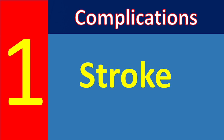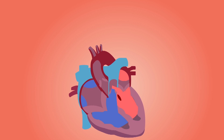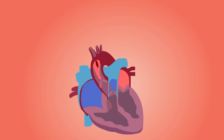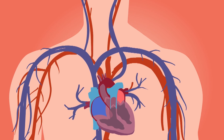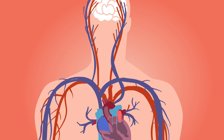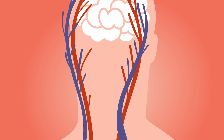Stroke is the most frequent major complication of atrial fibrillation. A clot that forms in the heart due to atrial fibrillation can dislodge and travel to the brain, blocking blood flow to a segment of the brain and leading to an ischemic stroke.